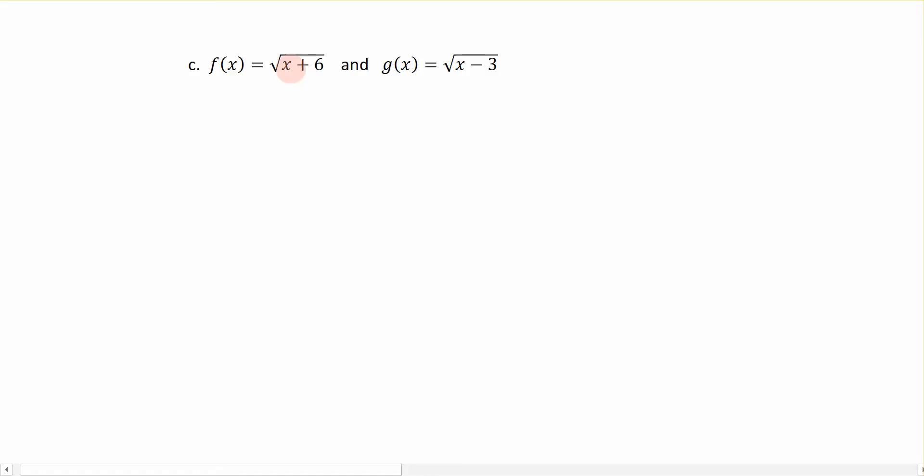In this one we're going to again find the sum of f plus g of x, and so we take f of x plus g of x, just like we've done previously. f of x is represented by the square root of x plus 6, plus g of x which is represented by the square root of x minus 3.